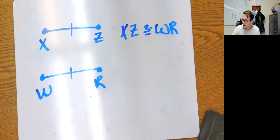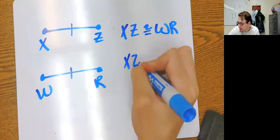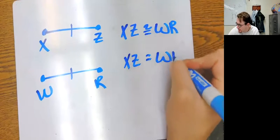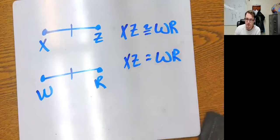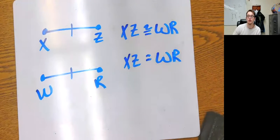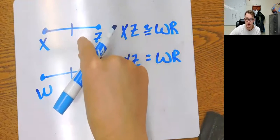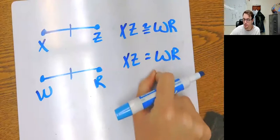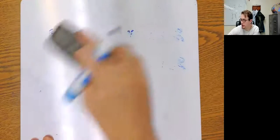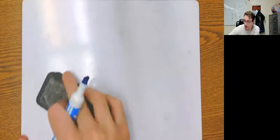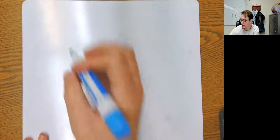And the point that they both have one tick mark also means that XZ would be equal to WR. You can change between them. If they're congruent then they're equal, and if they're equal they're congruent. So if they're congruent based on tick marks, then we can also say that they are equal. They're kind of interchangeable.